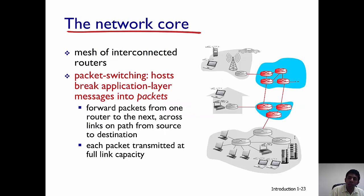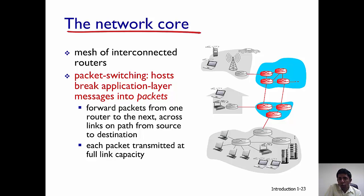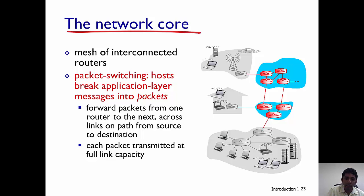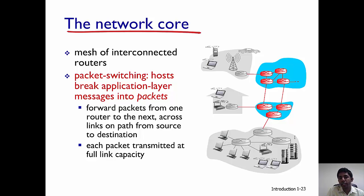What is the network core? The network core consists of a mesh of interconnected routers. In this figure, the routers in the two blue networks constitute the core of the internet, and what they do is help carry packets from the source to the destination.